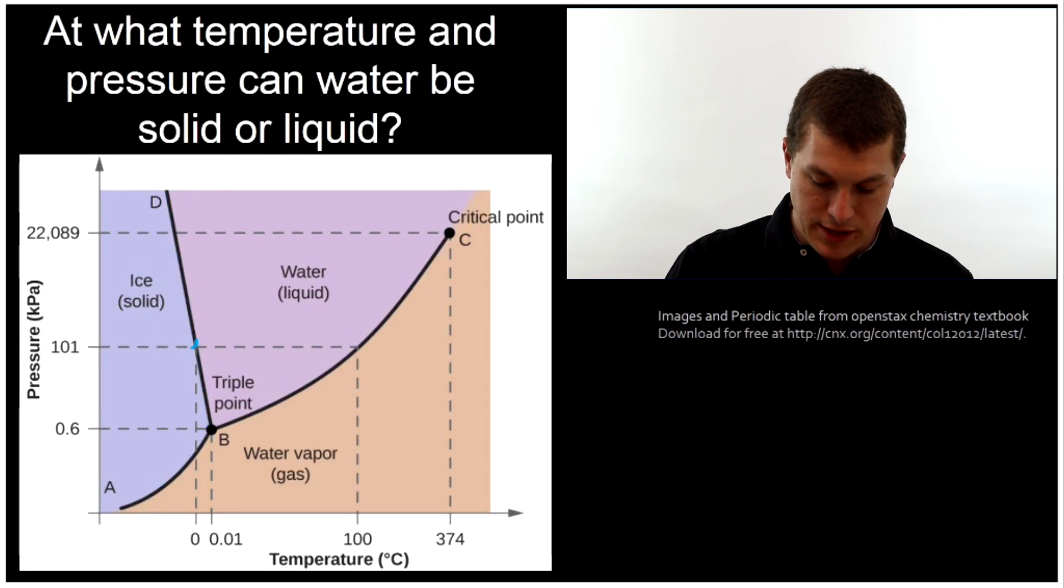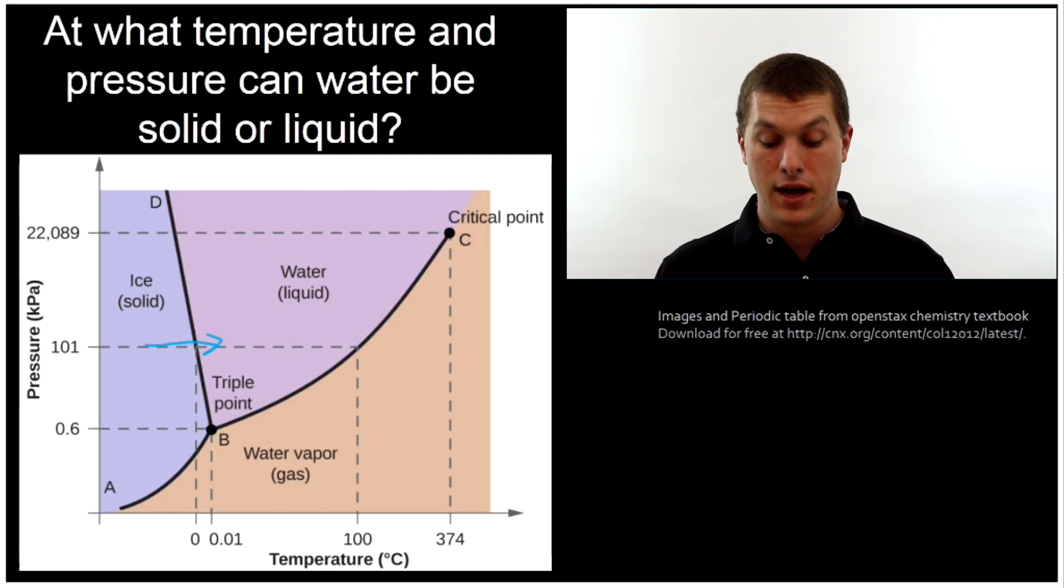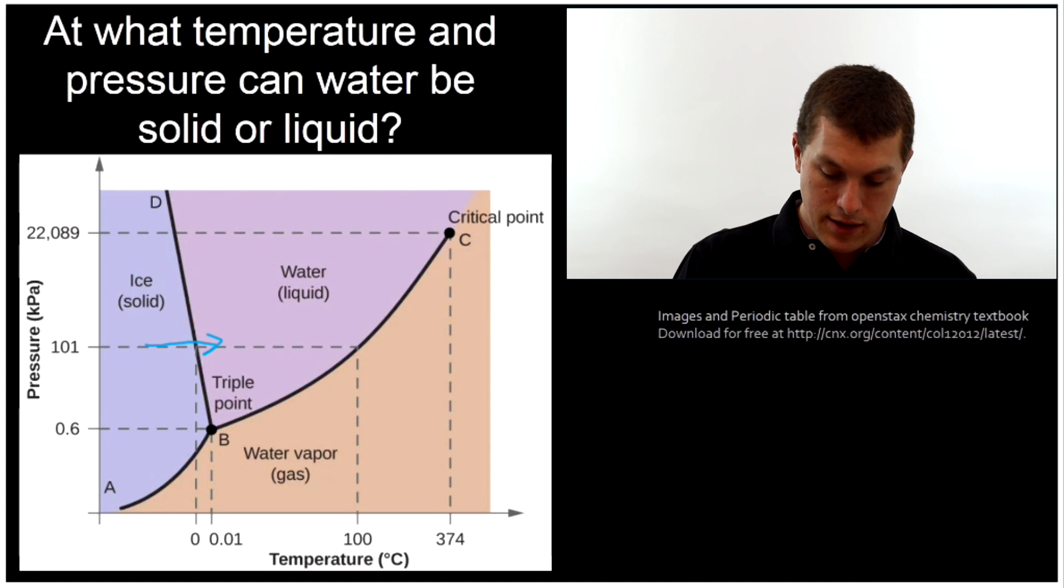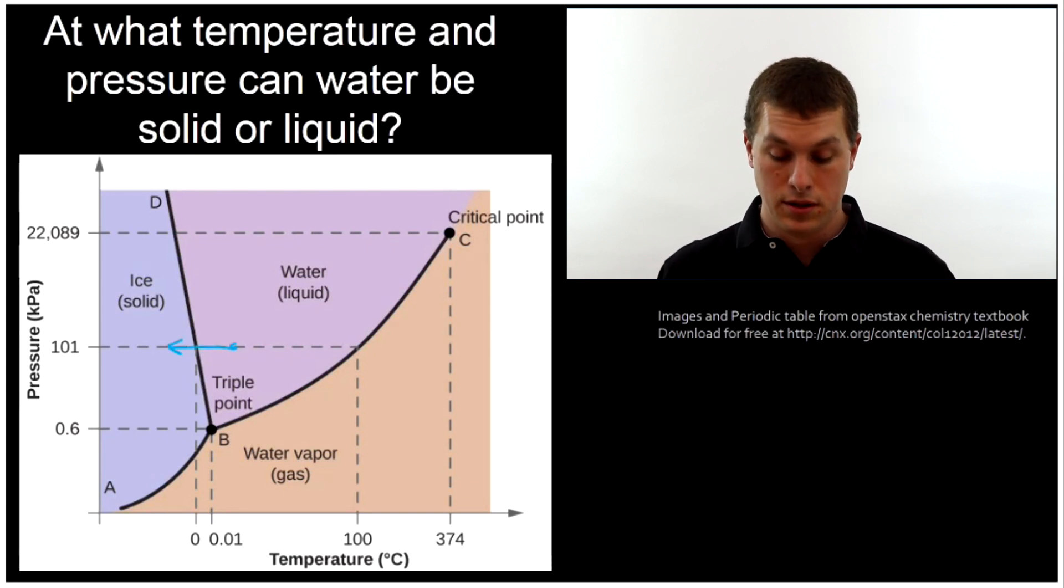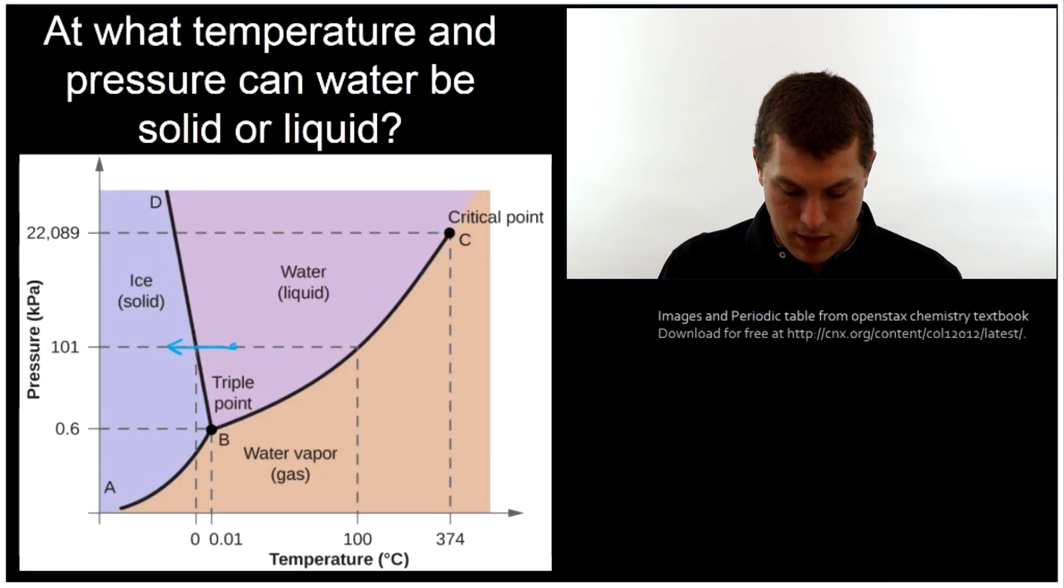And if we think more carefully about that, that means if I pick this pressure and then I travel to the right with temperature, well, that means I would melt the ice into water. On the other hand, if I pick a temperature that's higher like this and I go to the left, now I would experience a phase change where I'm freezing the water.